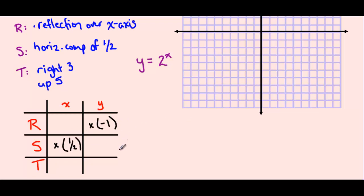Finally, for our translations, moving right 3 will add 3 to all of our x values, and moving up 5 will add 5 to all of our y values.